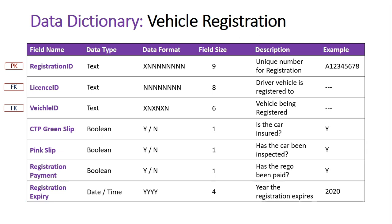For the examples, you'll notice dashes are used for License ID and Vehicle ID because we're not actually entering those IDs into this database — they'll be pulled across from the other database tables. It's not necessary to show entry examples here since they've already been created elsewhere, and the whole purpose of the relational model is no data redundancy — you should not be entering the same data twice.